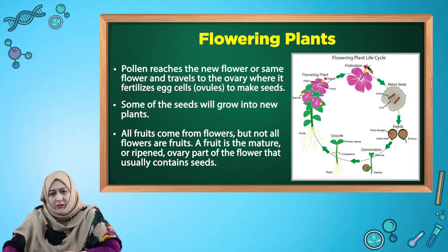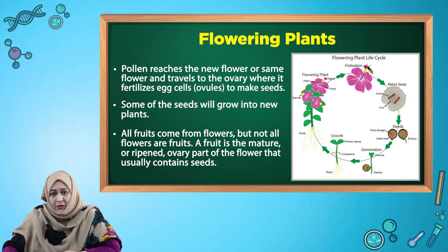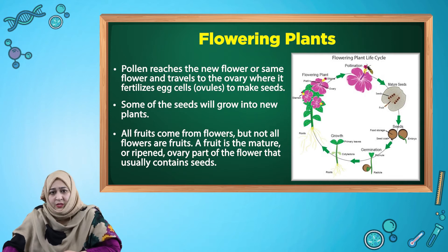Some of the seeds will grow into new plants. All fruits come from flowers, but not all flowers become fruit. A fruit is a mature, ripened ovary — part of the flower — that usually contains seeds.